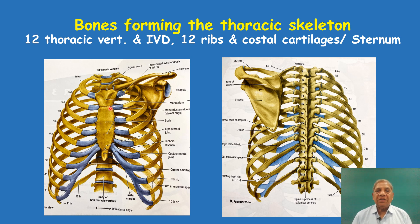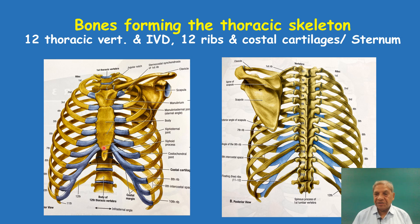Most anteriorly, the costal cartilages unite with the bone called the sternum. There will be a question on the sternum asking what its parts are. You tell the three different parts of the sternum. The sternum is a free bone — there is no support from below. Support comes only from the lateral side through the costal cartilages, and at the upper end the clavicle is articulated. There is no support from below to the sternum.